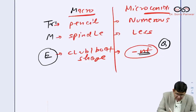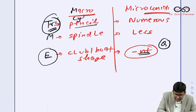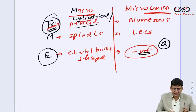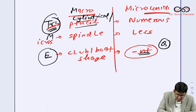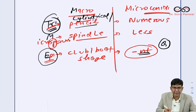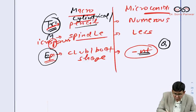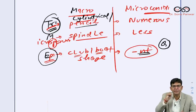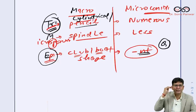How to remember them? Remember: Trichophyton — think 'Tricycle' — pencil or cylindrical in shape. Microsporum — 'Sp' — spindle in shape. Epidermophyton — 'epi' means above, so imagine over a club, what is there? A boat. So club or boat shape is Epidermophyton. These associations help you remember for a long time.